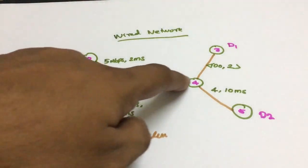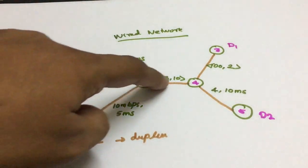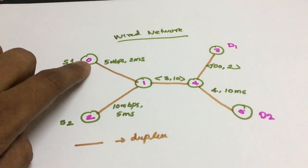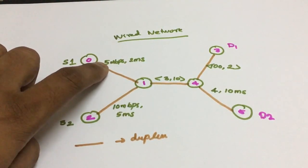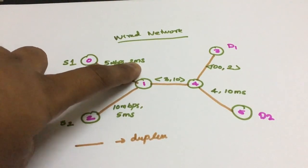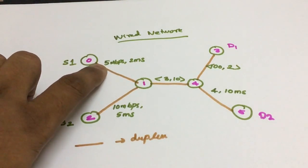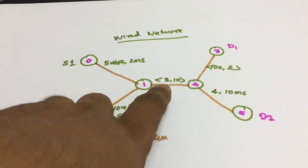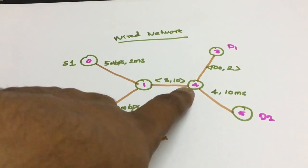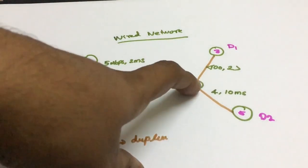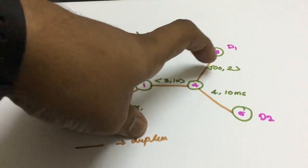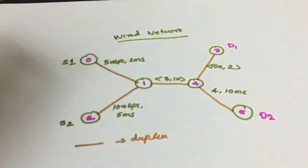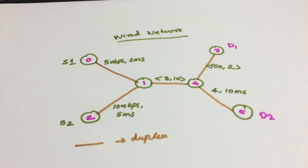The packet from S1 to D1 will go via 0 → 1 → 4 → 3, and the packet from S2 to D2 will go via another path. From 0 to 1, the bandwidth delay is 5 Mbps and 2 milliseconds; from 1 to 4 it is 3 Mbps bandwidth and 10 milliseconds delay; from 4 to 3 it is 100 Mbps bandwidth and 2 milliseconds delay — this will be the fastest link available, visible in the network animation window.